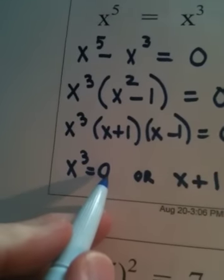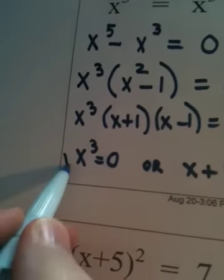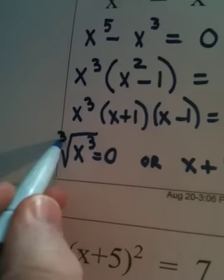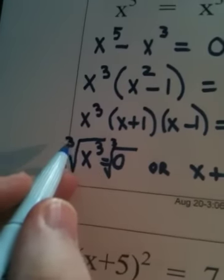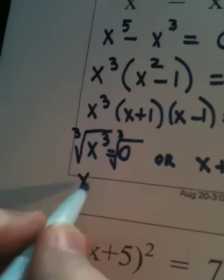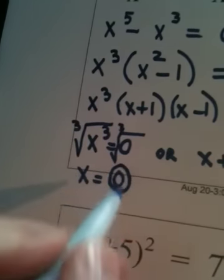If x cubed is equal to 0, remember what we need to do to undo cubing something is we cube root it. And what I do to one side of an equation I do to the other. The cube root of x cubed is x, and the cube root of 0 is 0. So one answer is 0.